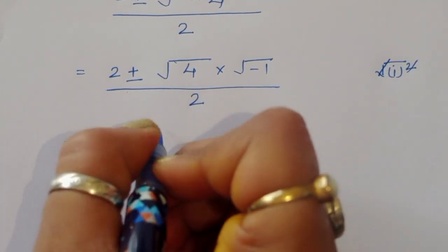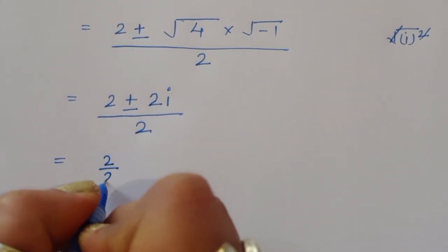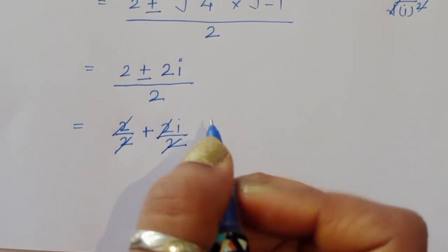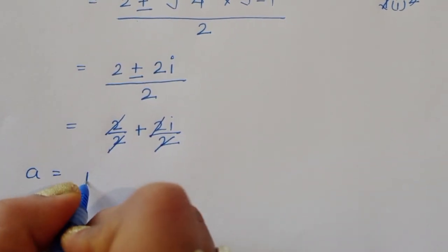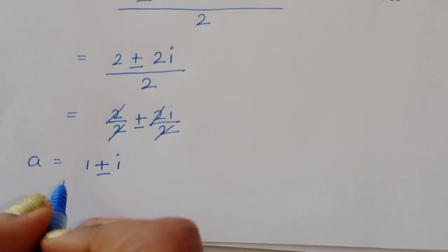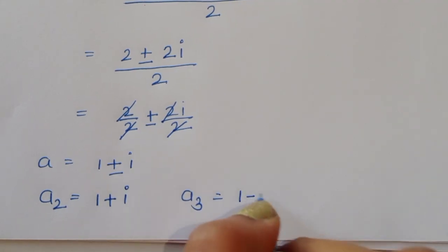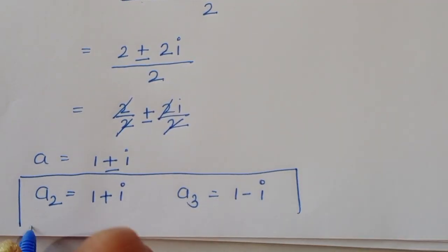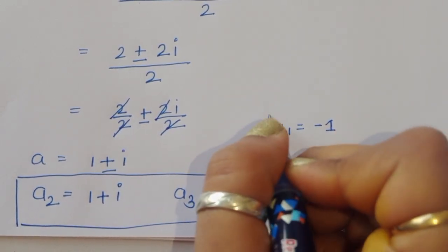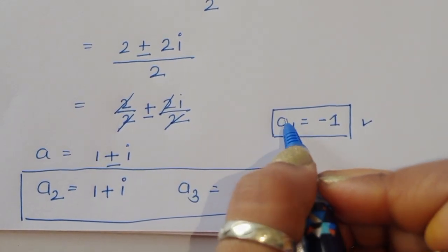Separating the terms: 2/2 plus or minus 2i/2, the 2s cancel, giving a equals 1 plus or minus i. So a₂ equals 1 plus i and a₃ equals 1 minus i. These are complex roots. Since a₂ and a₃ are imaginary solutions, we leave those and verify the real solution a₁ equals minus 1.